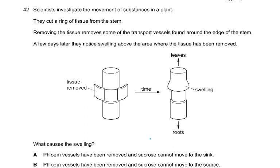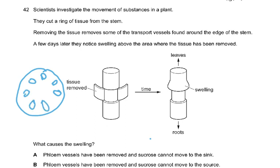Next question: scientists investigate the movement of substances in a plant. They cut a ring of tissue from the stem, removing some transport vessels found around the edge of the stem. In the stem, the vascular bundles are on the outside. The xylem is on the inside, so they are removing the phloem, which is on the outside. A few days later, swelling is noticed above the area where the tissue was removed.